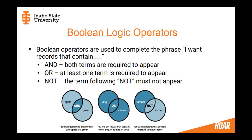When you write search queries and run them in library databases, you'll be using what are called Boolean logic operators — connectors between search terms used to complete the phrase: 'I want records that contain blank.' So I could say I want records that contain apple AND green. If I separate apple and green with a capital AND, I will get back records that contain both words. As shown in the Venn diagram, combining terms with AND will only get you records where both terms appear — it's a narrow, targeted search.